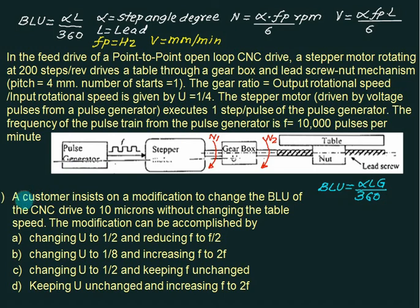Now the question is, a customer insists on a modification to change the BLU of CNC drive to 10 microns. Initially it was 5 microns. Now you want to make it 10 microns. What modification should you do? Very first thing is whatever modification you want to do, you do not have to change the frequency of the pulse generator. It means this choice is correct, but we will check.